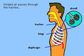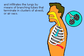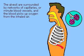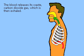When we inhale through our nose and mouth, air passes through the trachea and infiltrates the lungs through a network of tubes whose branches become finer and finer until they reach the clusters of alveoli. The alveoli are surrounded by capillaries, minute blood vessels that allow the blood to absorb oxygen. These capillaries also allow the blood to release its carbon dioxide, which is then exhaled.